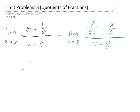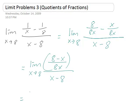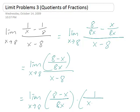So you get the limit as x approaches 8 of 8 minus x over 8x, all over x minus 8. It may help to put the parentheses in here so you know which part of the fraction goes where. And since we're dividing two fractions, we can write this out as 8 minus x over 8x times 1 over x minus 8.